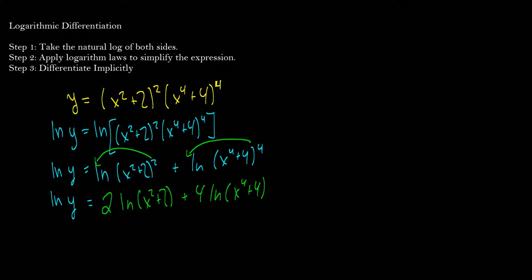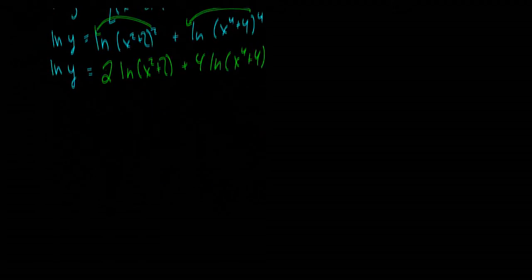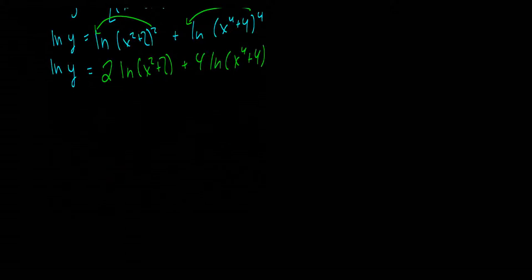And now we can differentiate implicitly. So what happens in this case? Well, if we take the natural log of both sides, we get 1 over y, since that's the log of y, times y prime.